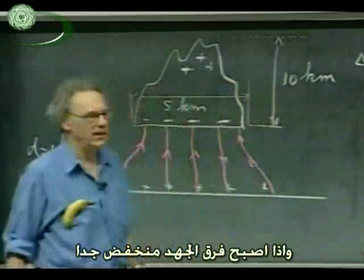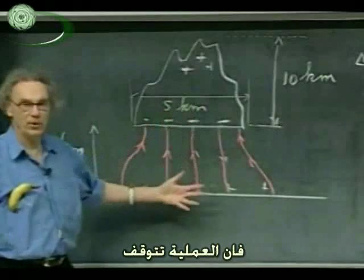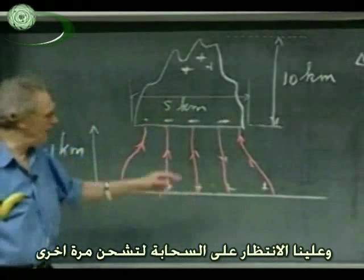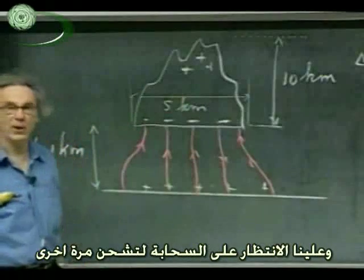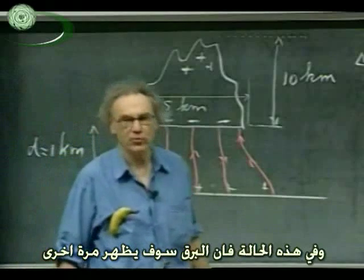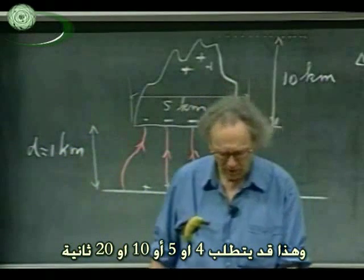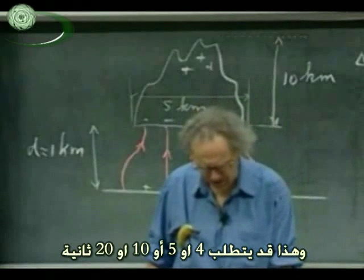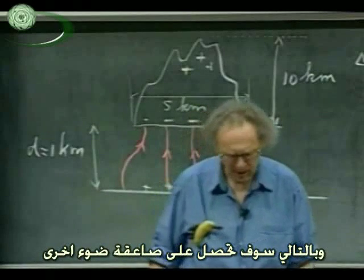That will, of course, lower the potential difference. And if the potential difference becomes too low, then the process stops. You have to wait for the cloud to charge up again, and then lightning will strike again. That can take anywhere from maybe 4, 5, 10, or 20 seconds — and then you get another lightning bolt.